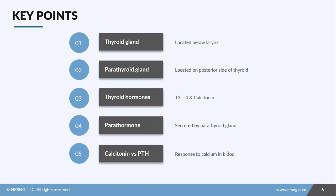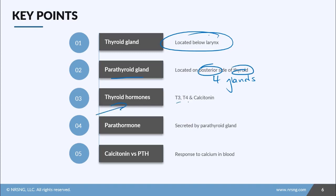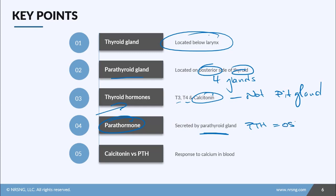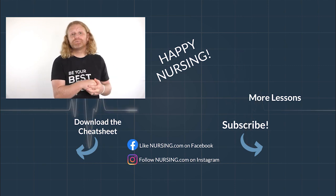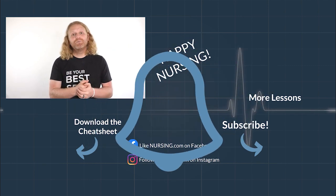Let's recap. The thyroid gland is located just below the larynx and in front of the trachea. The four parathyroid glands are located on the posterior side of the thyroid gland. The thyroid hormones are T3, T4, and calcitonin — remember, calcitonin is not controlled by the pituitary gland. Parathormone is secreted by the parathyroid gland, with a direct relationship to osteoclast production. Calcitonin is directly a response to calcium levels in the blood. Thanks for watching — click the link below to watch thousands more lessons on nursing.com, and be sure to hit subscribe and the bell for new lesson reminders.